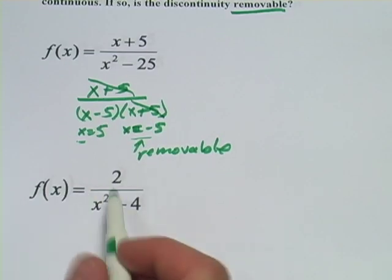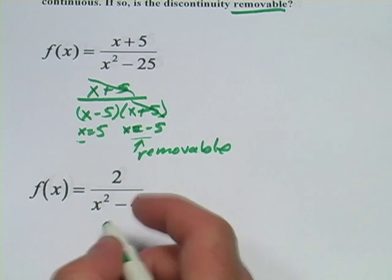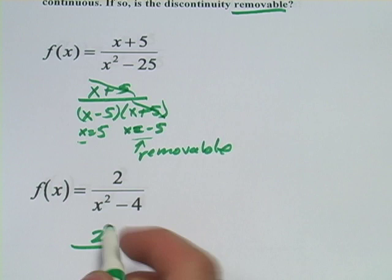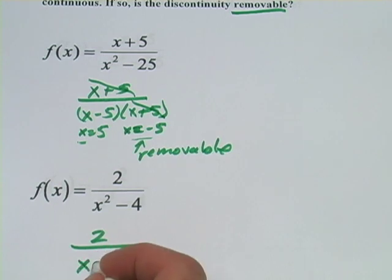Alright, let's look at one more. Here we have 2 over x squared minus 4, and again we can factor the denominator to find the discontinuities. This is a difference of squares again, so that's x minus 2 and x plus 2.